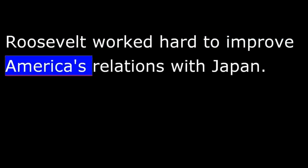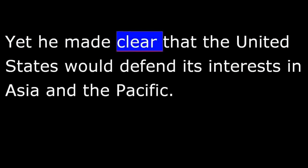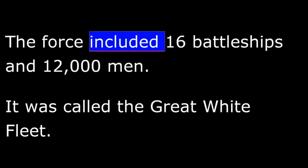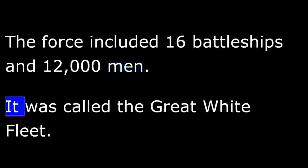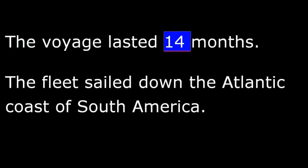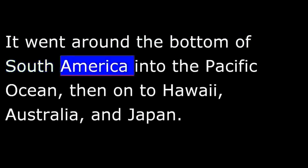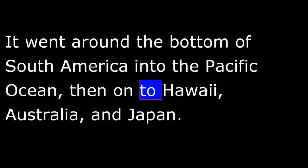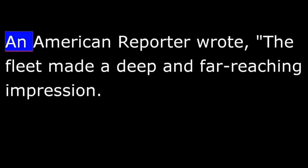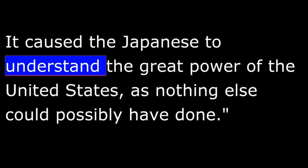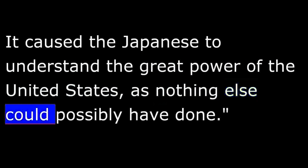Roosevelt worked hard to improve America's relations with Japan, yet he made clear that the United States would defend its interests in Asia and the Pacific. As a warning, he sent a naval force on a voyage around the world. The force included 16 battleships and 12,000 men, and was called the Great White Fleet. The voyage lasted 14 months. The fleet sailed down the Atlantic coast of South America, around the bottom of South America into the Pacific Ocean, then on to Hawaii, Australia, and Japan. Surprisingly, it received its warmest welcome in Japan.